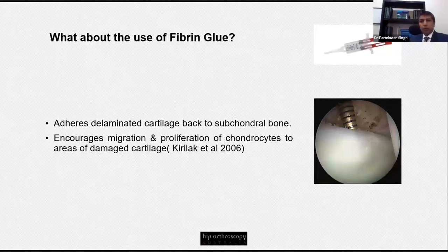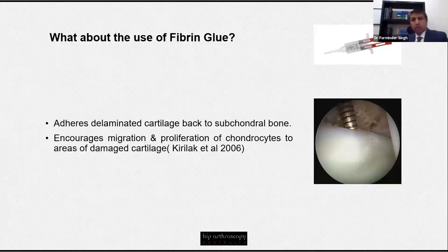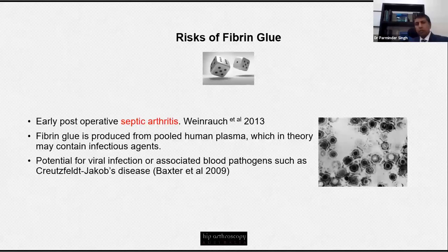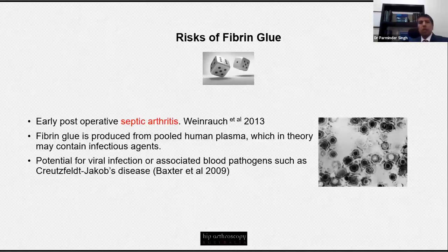Is fibrin glue the glue we should all be using? It works by adhering the delaminated cartilage back to the subchondral bone, encouraging migration and proliferation of chondrocytes to areas of damaged cartilage. However, there are drawbacks: Patrick Weinreich in Queensland reported two cases of septic arthritis using this product. When interrogated, Baxter acknowledged that in theory an infection can occur, as the fibrin product is pulled from human plasma and can carry a risk of viral and associated blood-borne pathogen infections.